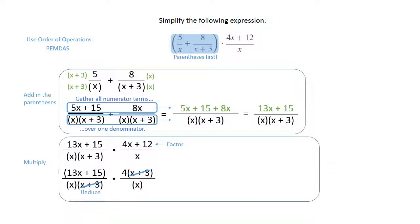You cannot cross out those x's on the bottom because they are next to each other. They have to be on top of one another or diagonal. There's nothing else we can cross out, so we're going to multiply straight across. That gives us 4 times 13x plus 15 over x squared if you multiply the two x's on the bottom.